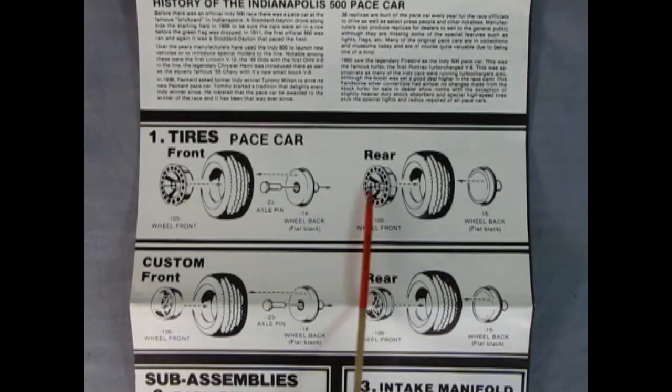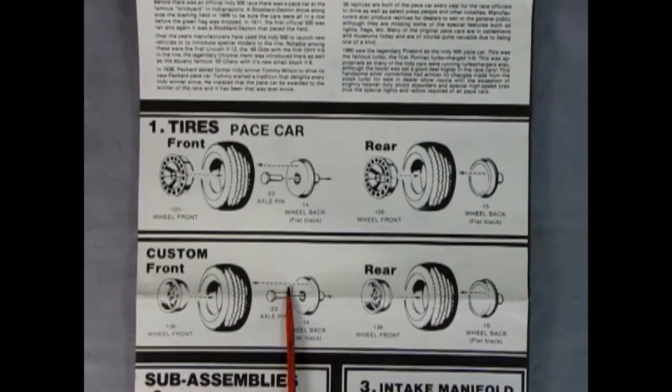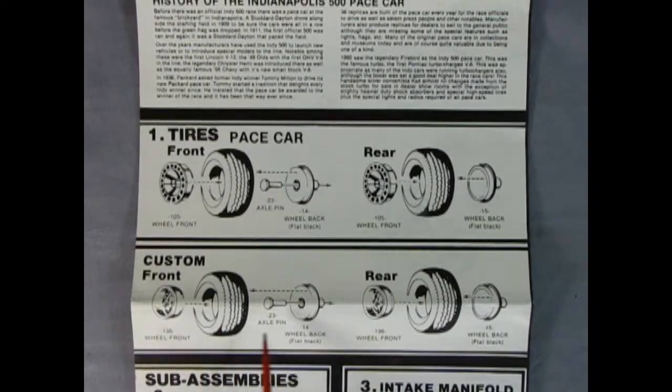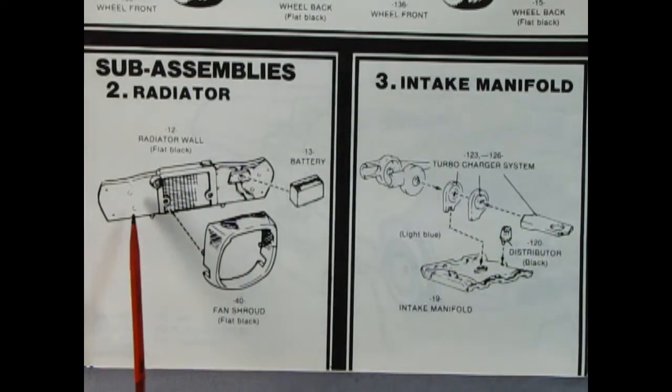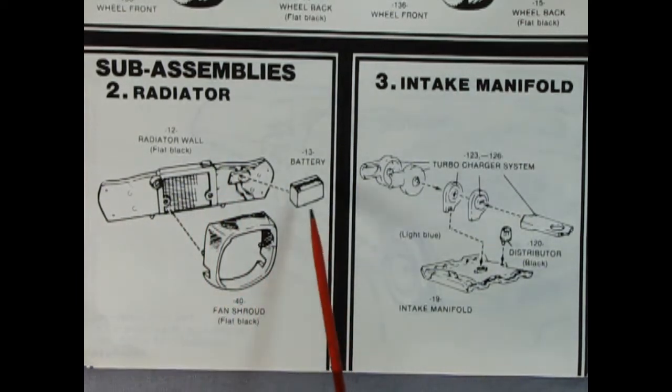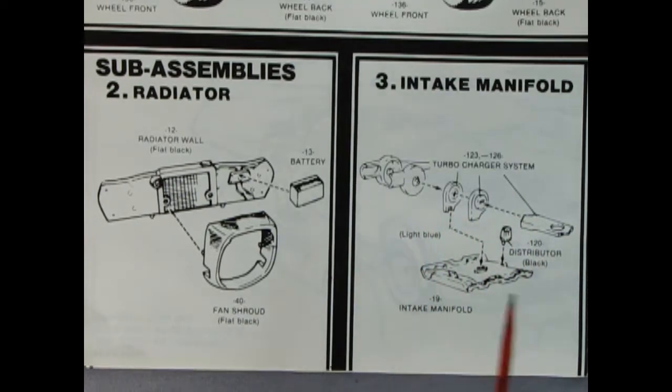And for the rear, we get that nice wheel again, the tire and the wheel back. And then we've got custom wheels as well. So you could really spice up your car. Panel two shows the sub-assembly. Here we have our radiator wall, the fan shroud, and the battery. And then step three is the intake manifold. So here we've got all our turbocharger pieces.